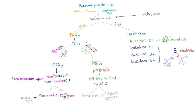Briefly on the arachidonic acid pathway: membrane phospholipid, thanks to phospholipase A2, gives us arachidonic acid, then prostaglandin G2 via cyclooxygenase. Then we have thromboxane synthase and prostacyclin synthase. If you are in the platelet and you want to clot, thromboxane synthase produces thromboxane A2, which vasoconstricts and increases platelet aggregation. If you are the smooth endothelium, you secrete prostacyclin to keep the blood flowing by vasodilation and preventing platelet aggregation — i.e., anticoagulation.